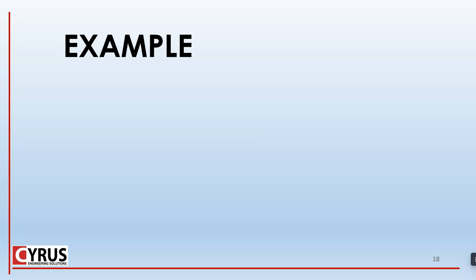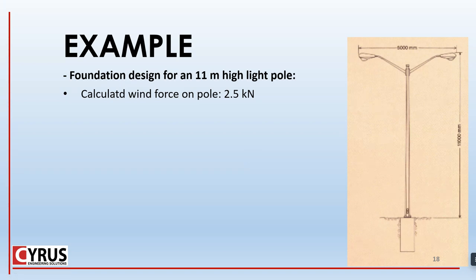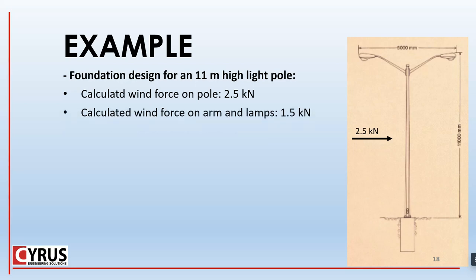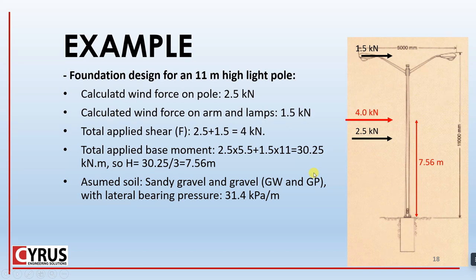To review what we discussed, let's design a foundation for an 11-meter-high light pole based on the IBC method. The calculated wind force on the pole is 2.5 kN, the wind force on arms and lamps is 1.5 kN, and the total applied shear is 4 kN. The resultant height H is calculated to be 7.56 meters. The assumed soil at the job site is sandy gravel and gravel, for which the allowable lateral bearing pressure from the table is 31.4 kPa per meter.